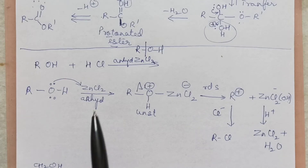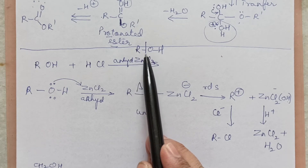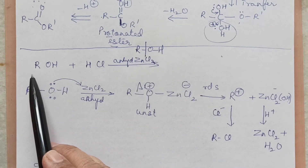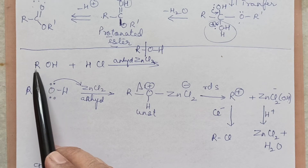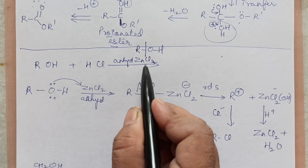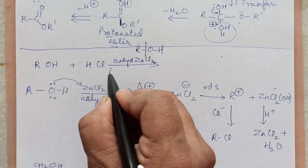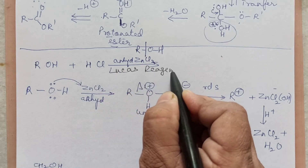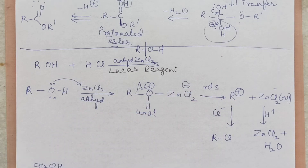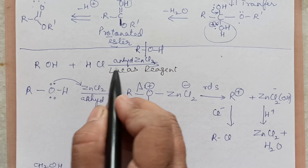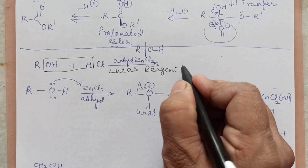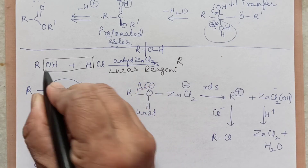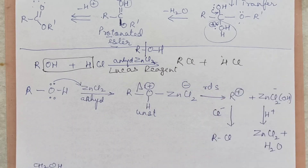Now we will take a different type of reaction where the R-O bond breaks — meaning OH comes out. One such reaction is with Lucas reagent: anhydrous ZnCl2 and HCl. This is Lucas reagent — we have done this also in haloalkane/haloarene to distinguish between primary, secondary, and tertiary alcohols. What happens: alcohol + HCl — this part comes out as water, giving RCl — you get the alkyl halide.